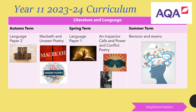Here is a brief outline of the year 11 curriculum for the whole year. We start with Language Paper Two, and then on our Friday lessons we do literature — Macbeth, Unseen Poetry, An Inspector Calls, and Power and Conflict Poetry — so that they're constantly retrieving the knowledge they need for their mock exams and the exams in the long run. Then in the spring term we revise Language Paper One, again splitting the week of lessons to include literature as well.